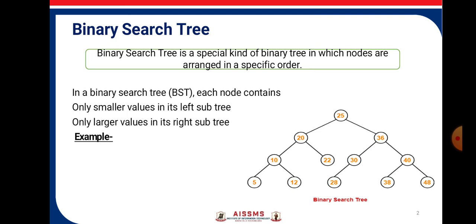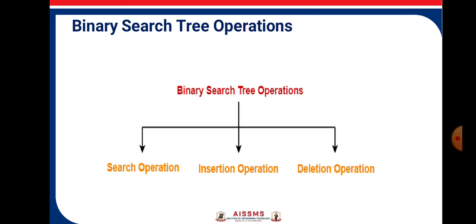Here in this tree we see all the smaller values are to the left side of 25, and all the larger values are to the right side of 25.